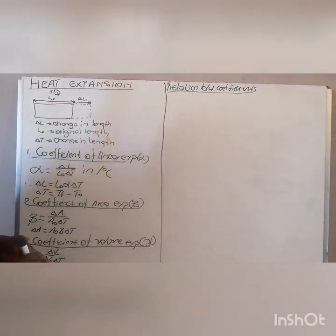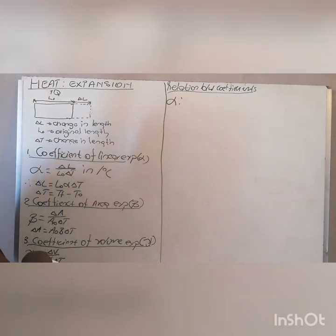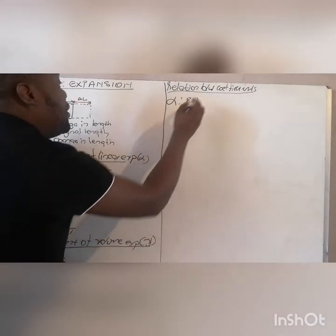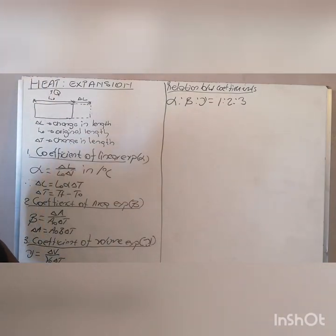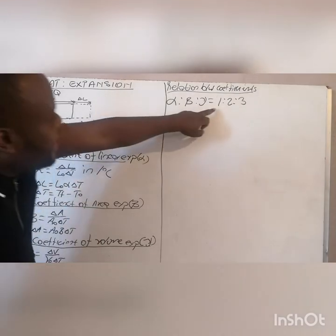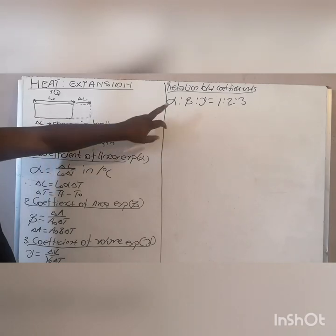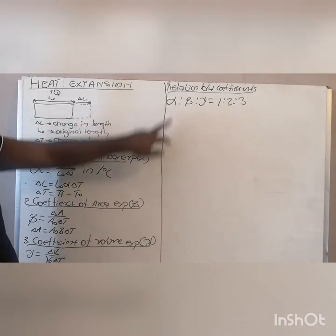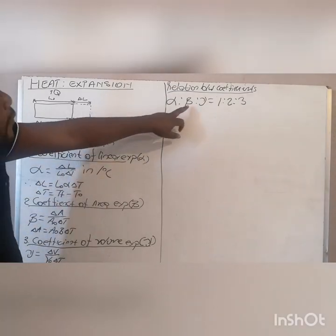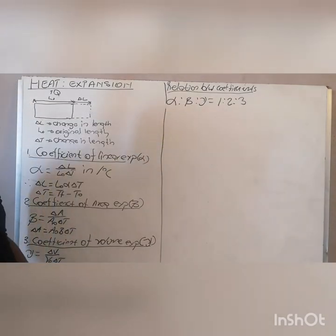The relationship between the three coefficients: you have your linear, you have your area, you have your volume — corresponding to 1, 2, 3. This is one of the easiest summaries which you must remember. They will ask you the relationship between your three coefficients. This ratio tells you the difference between the area, the volume, and the linear. For your area expansion, it will be two times bigger than your linear expansion. For your volume, it will be three times bigger than your linear expansion.